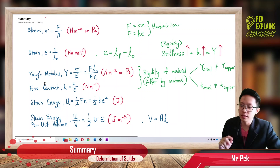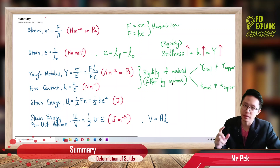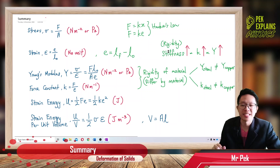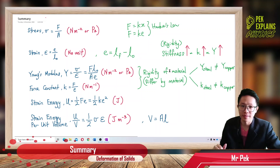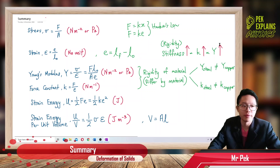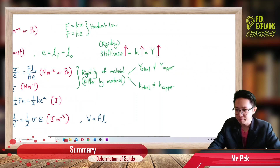About Young's modulus and force constant: they differ by their value, and their value differs by material. Different material gives different Young's modulus and also different force constant. Basically, they show the rigidity, stiffness, toughness, or hardness of the material. So the higher the rigidity, stiffness, hardness, or toughness of the material, the higher the force constant and the higher the Young's modulus.